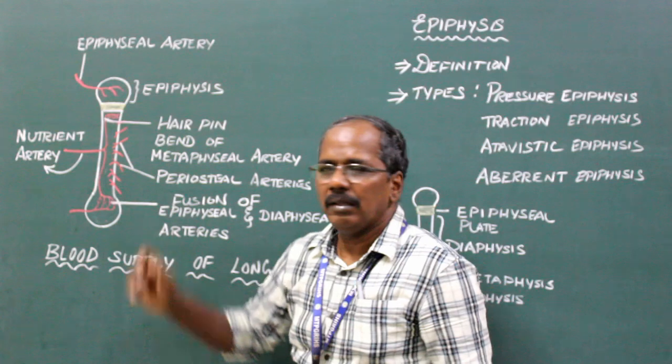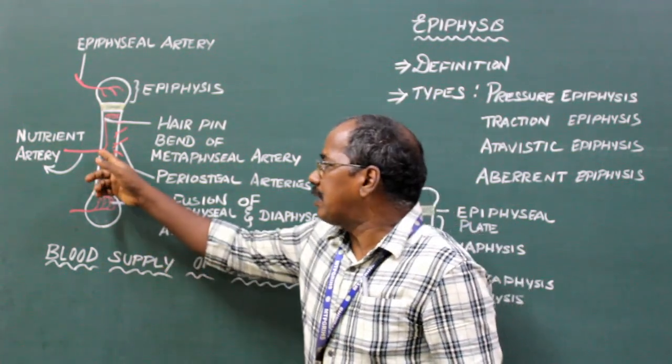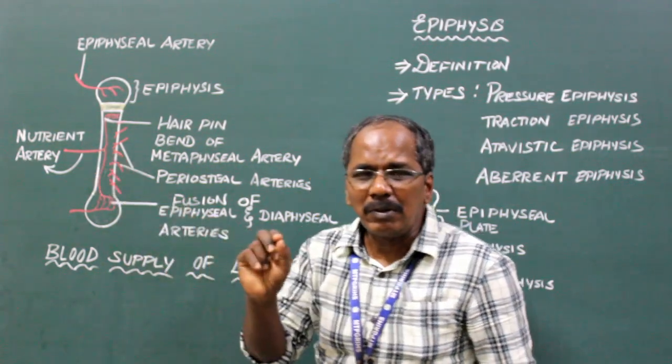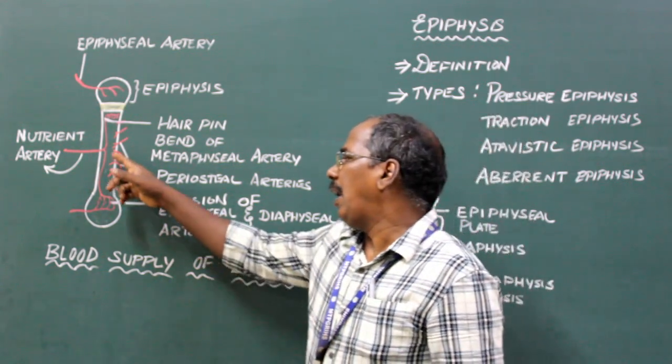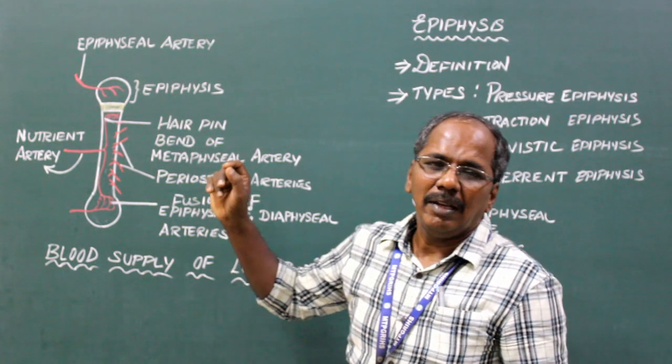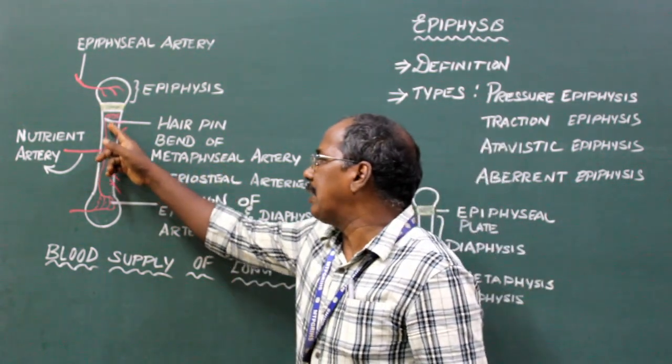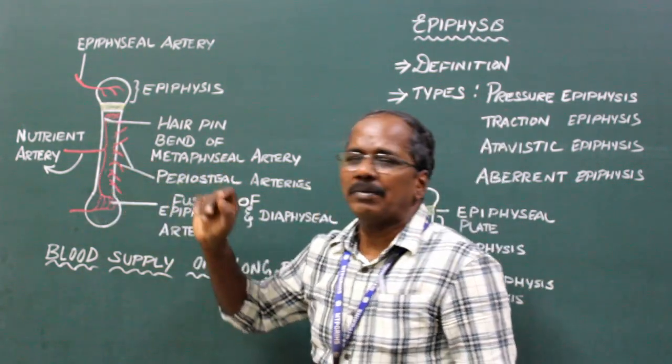The nutrient artery enters the shaft through the nutrient foramen and divides into ascending and descending branches.